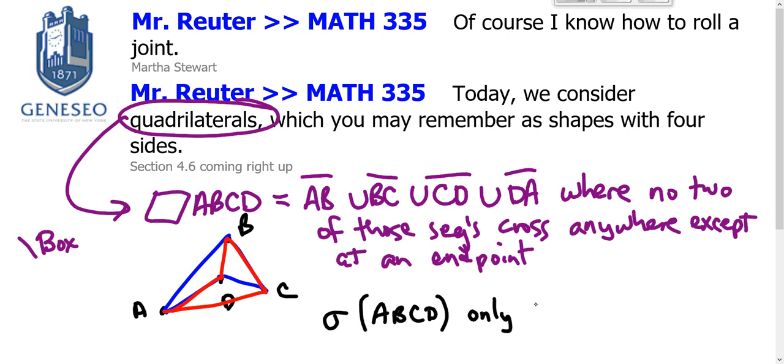The blue quadrilateral has what my geometry teacher would have called a reflex angle, an angle whose measure is greater than 180. Similarly for the red quadrilateral. So we talk about the angle sums of quadrilaterals, but only convex quadrilaterals.